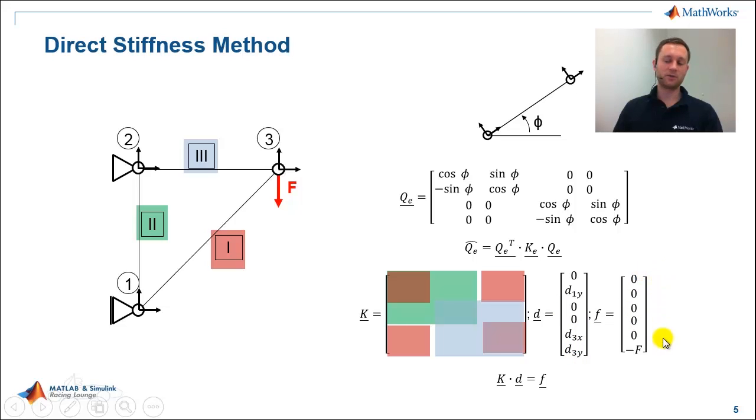Then we introduce the load vector here. We are applying a load pointing down to the earth on degree of freedom 6. And the following equation is already the system equation. It looks a bit like Hooke's law and at the end it's nothing but Hooke's law but for a 2D situation. We have the system stiffness matrix K, we have the displacement vector D and the force vector F. Then nothing is as easy as putting those matrices to MATLAB and solve for the displacements.